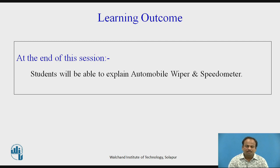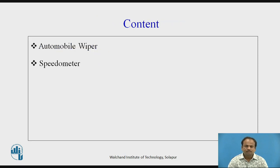Learning Outcome. At the end of this session, students will be able to explain electric horn and speedometer. So in this particular session, we are going to discuss two things: windscreen wiper and the speedometer.